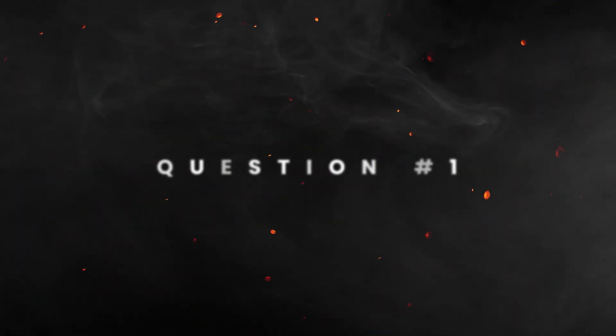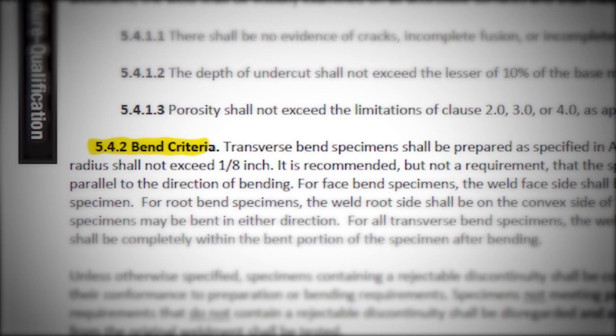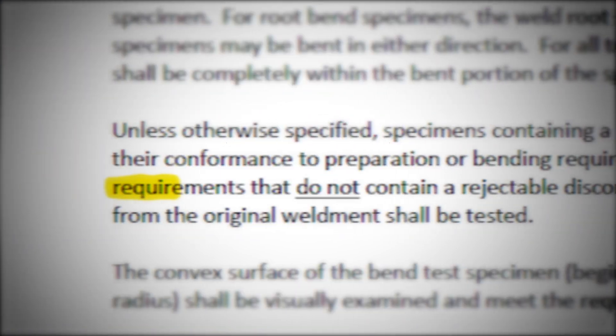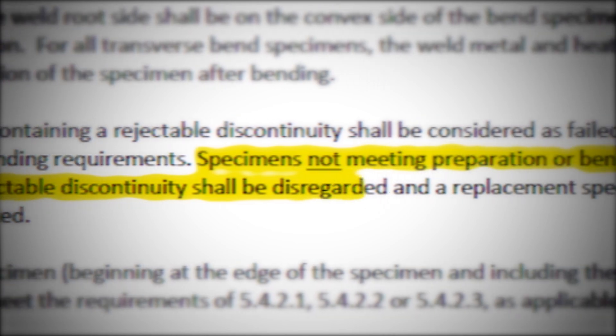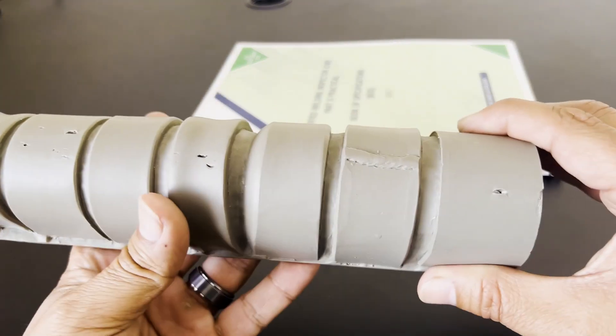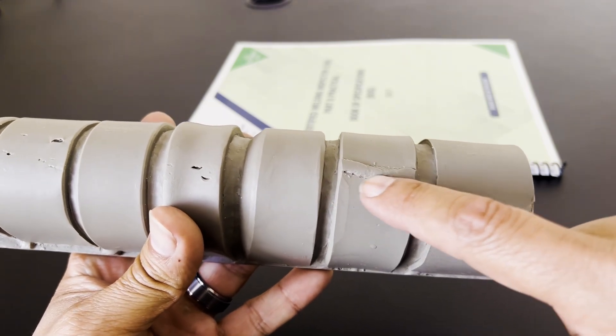So for the first question, we'll talk about the proper preparation bend specimens should have. If you take a look at the book of specifications on section 5.4.2, bend criteria, on the second paragraph, it states: specimens not meeting preparation or bending requirements that do not contain a rejectable discontinuity shall be disregarded and a replacement specimen prepared from the original weldment shall be tested. You just have to be careful selecting the answer to this question and pick the most relevant answer based on this bend criteria.